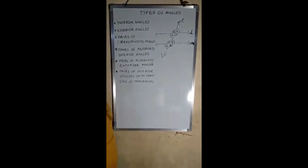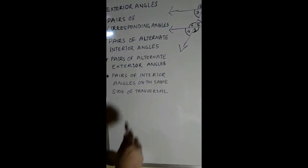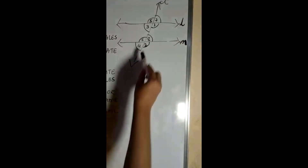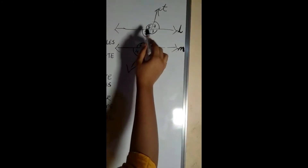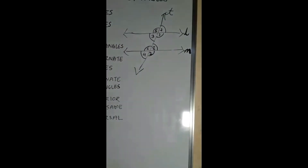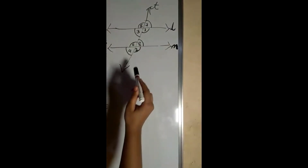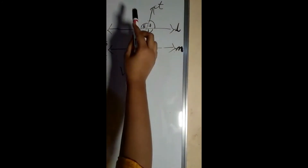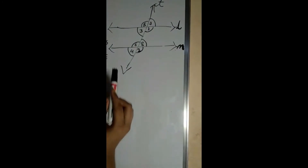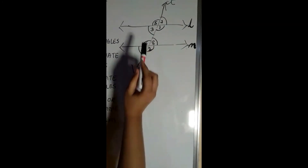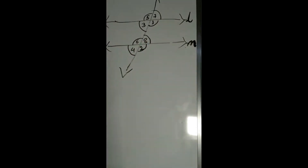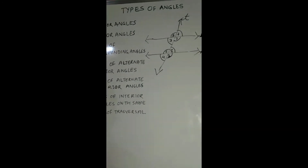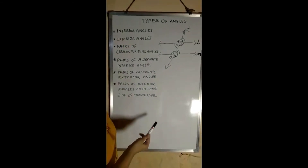Now let us study about pairs of interior angles on the same side of the transversal. T is the transversal in this figure. We know that 3, 1, 6, and 8 are interior angles. On the same side of the transversal, 3 and 6 are on the same side, and 1 and 8 is also an example of interior angles on the same side of the transversal.